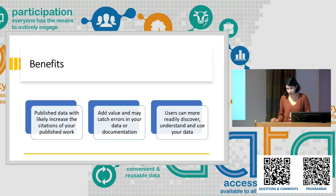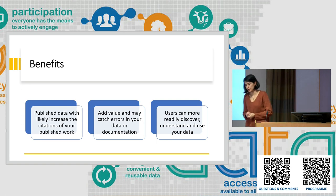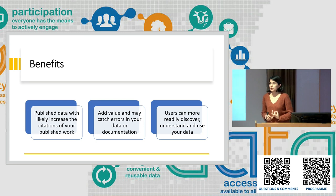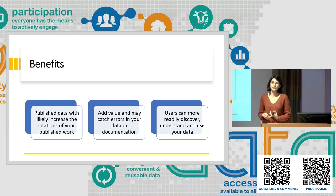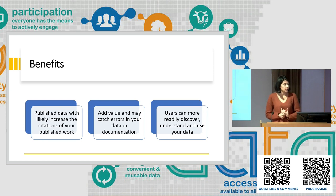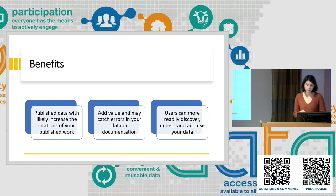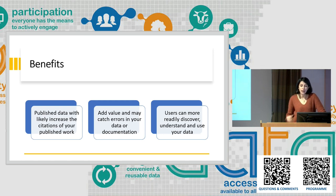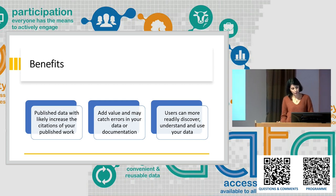In brief, the benefits of publishing with geographic metadata standards, a Jupyter Notebook enabling data exploration, and a data paper are: you get more citations, you add value and may catch errors in your data or documentation, and users can readily discover, understand, and use your data.